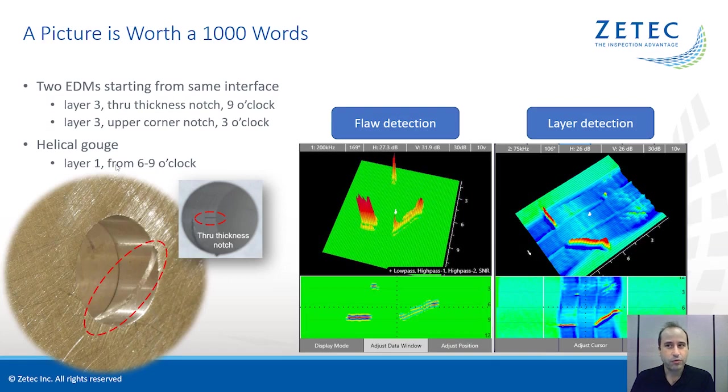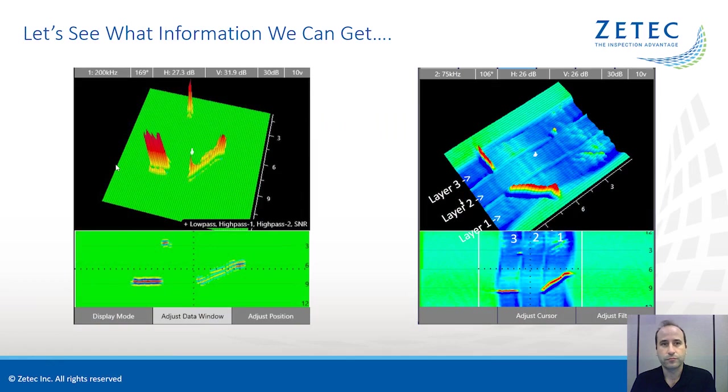This is the same hole inspected with the MIS-21C. I use two independent channels. One is dedicated to flaw detection and the other one is dedicated to layer detection. Let's take a closer look and see what information we can get from these images.